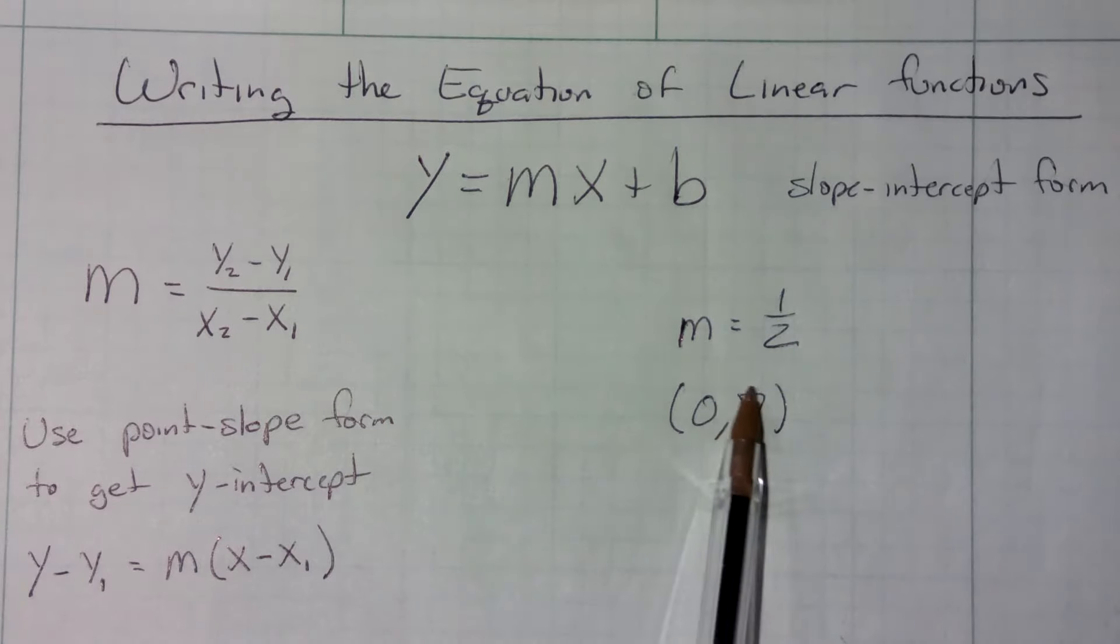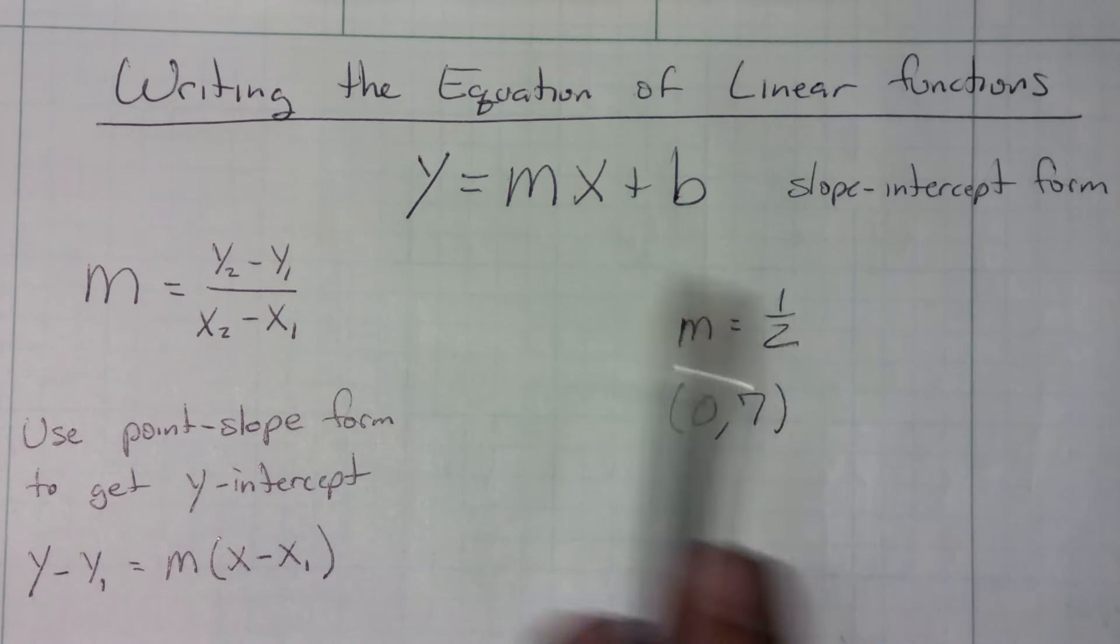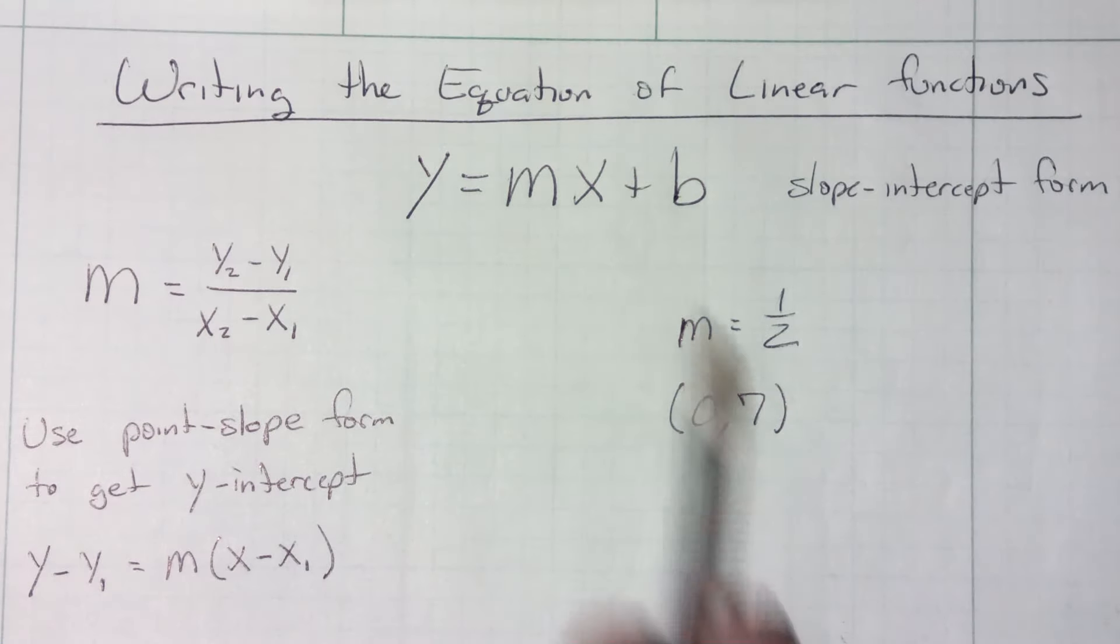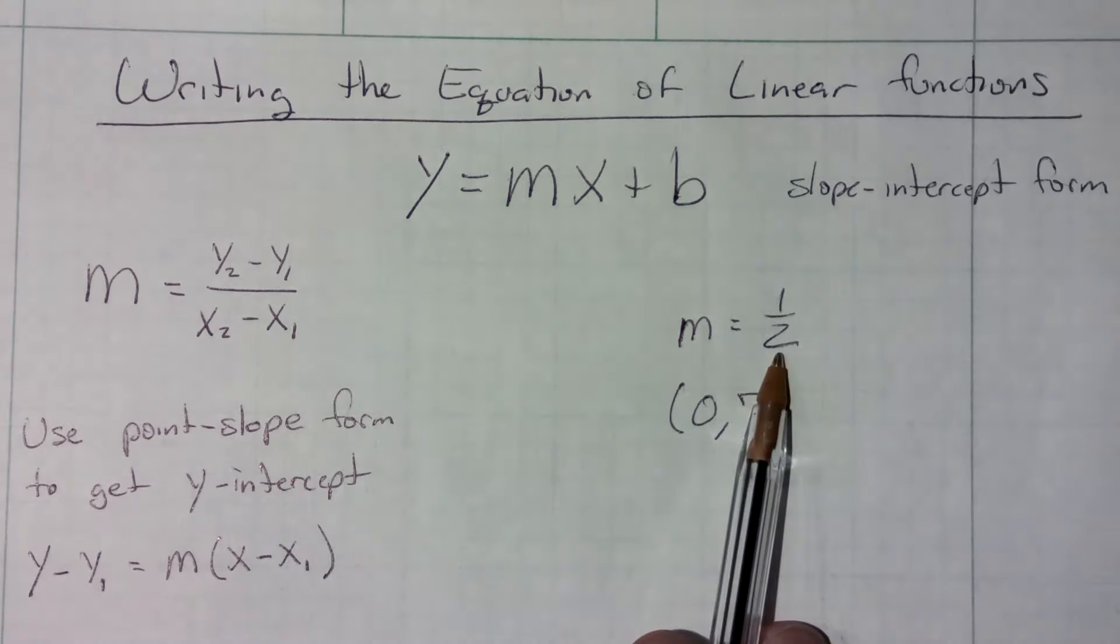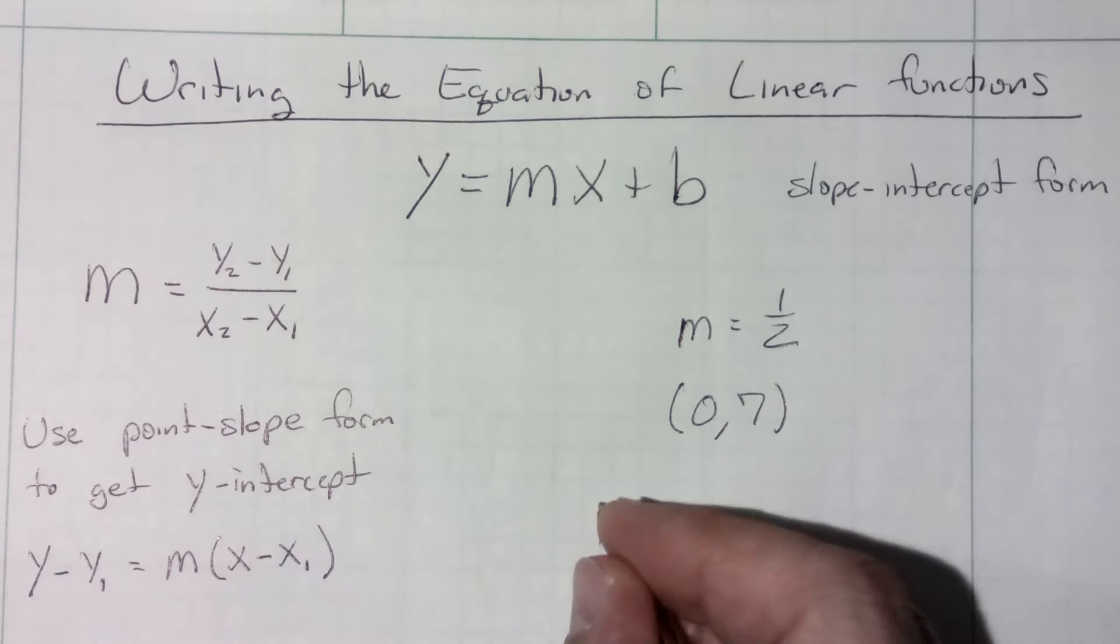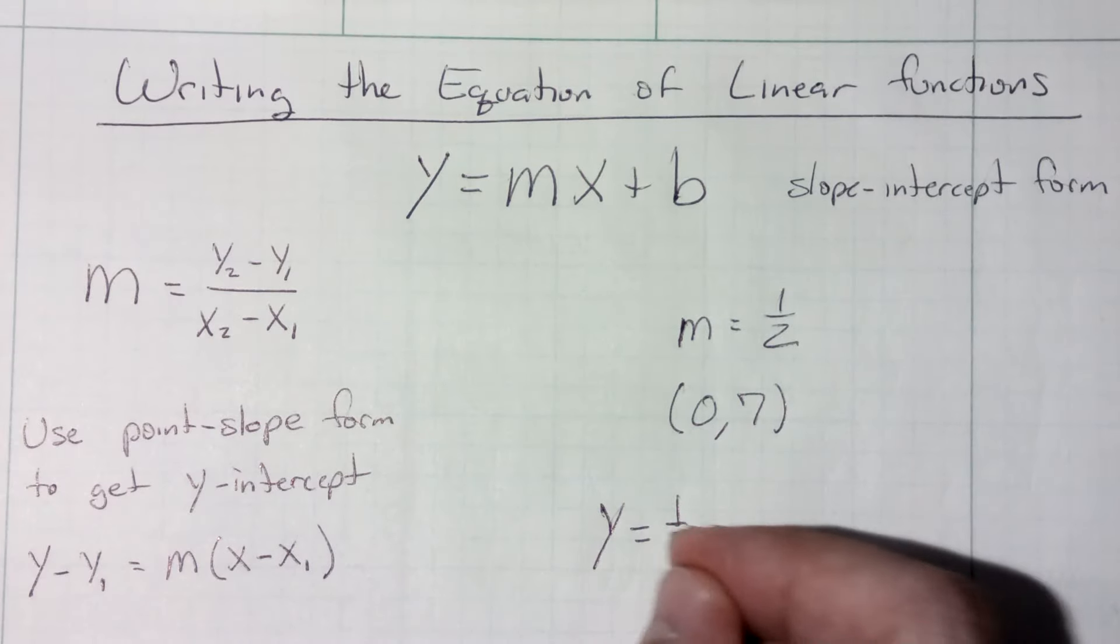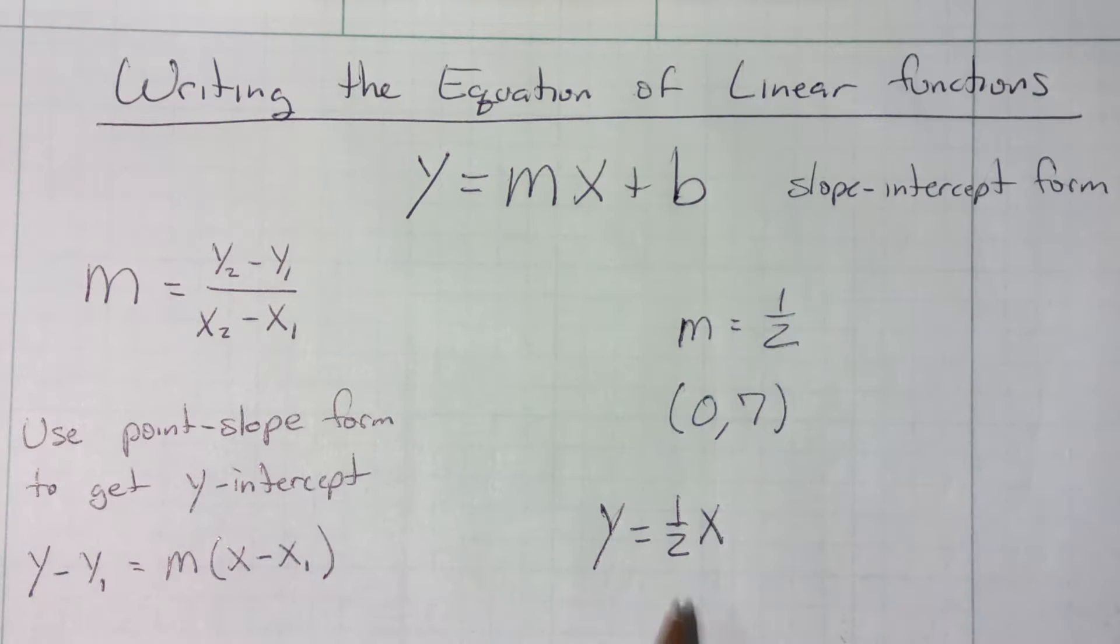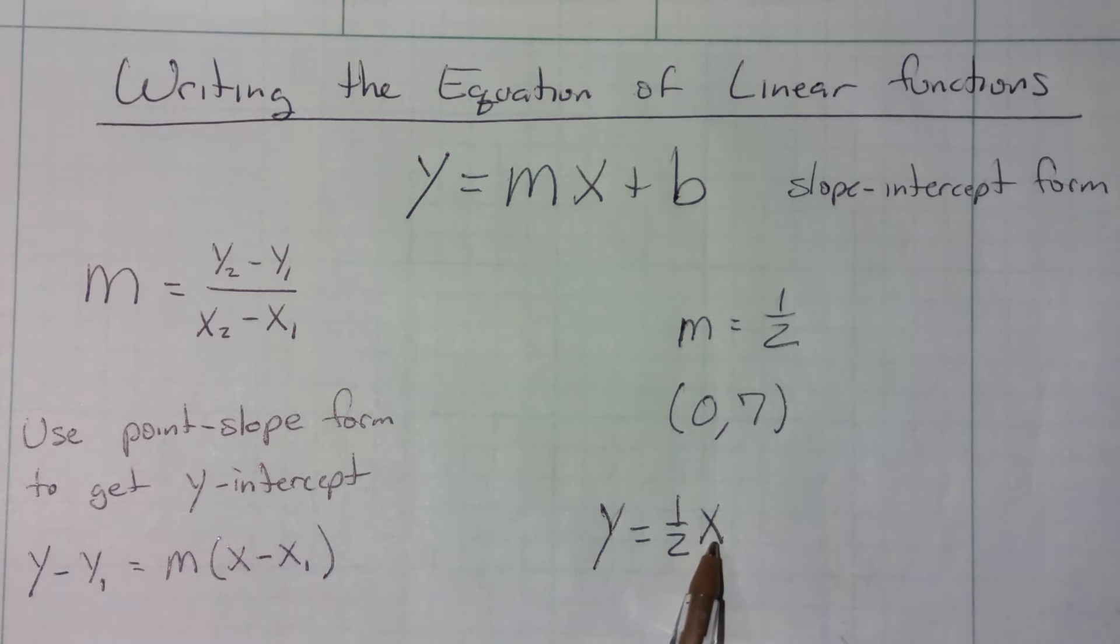Well, if that's the simple information they give you, all you got to do is replace m with the slope they gave you, and replace b with this y value that's paired with an x value of 0. So it'd be just as simple as to go y equals one-half x, don't forget to write the x, a lot of students for some reason forget to put in that x variable, plus 7, and I've already got my solution.